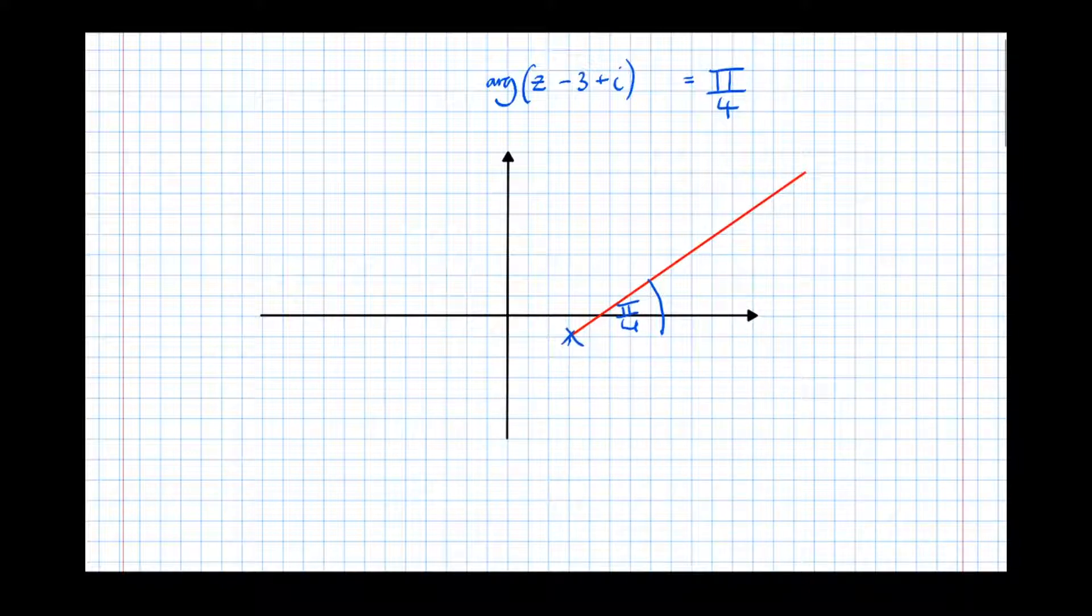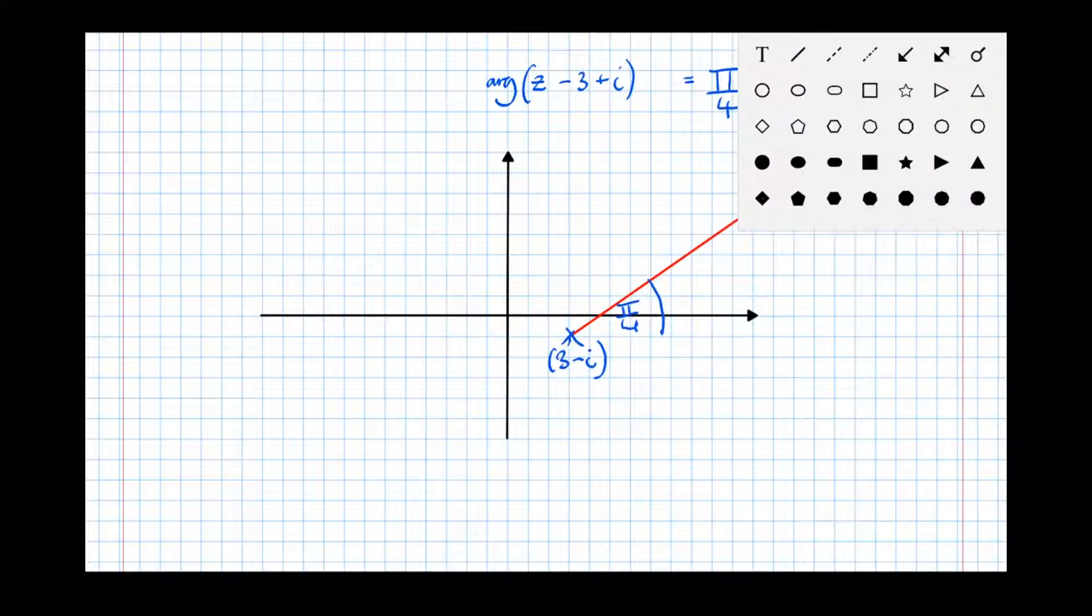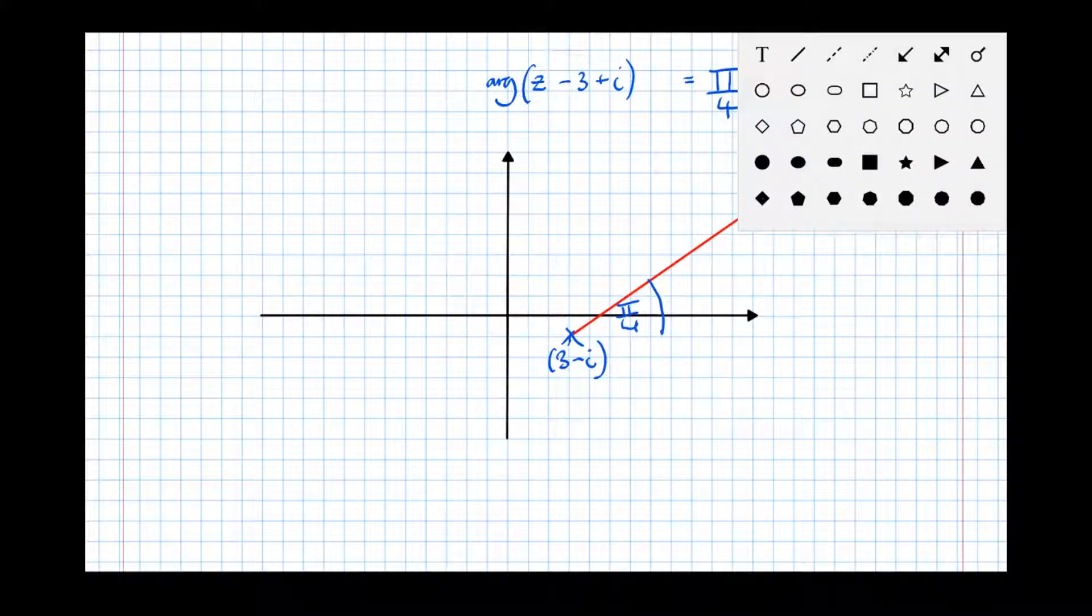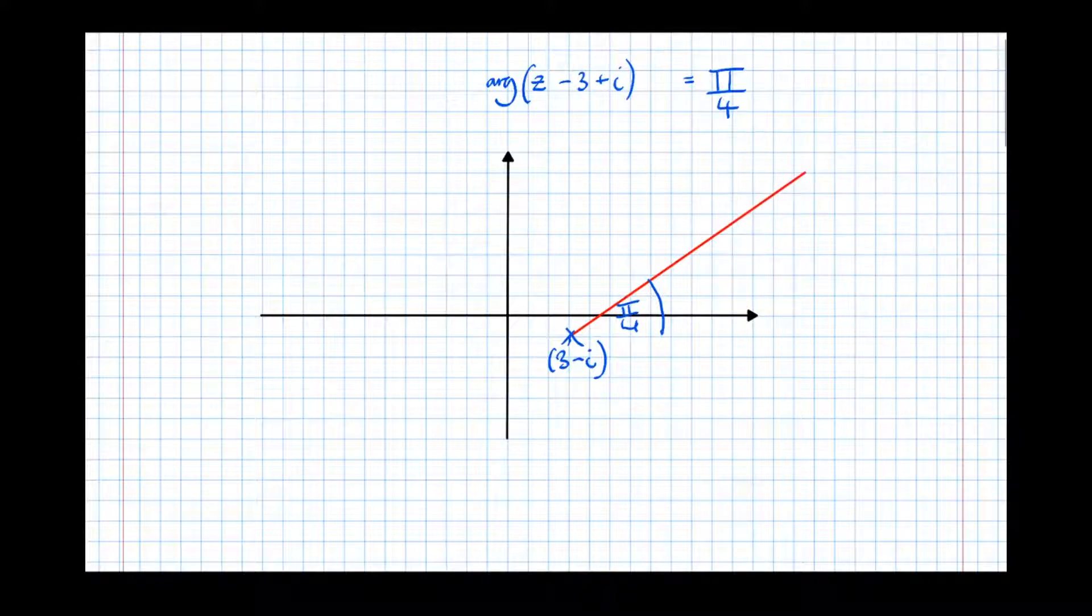So this point here is 3 minus i. And just for clarity, let's do a dotted line to show what angle we're actually measuring. Like that.